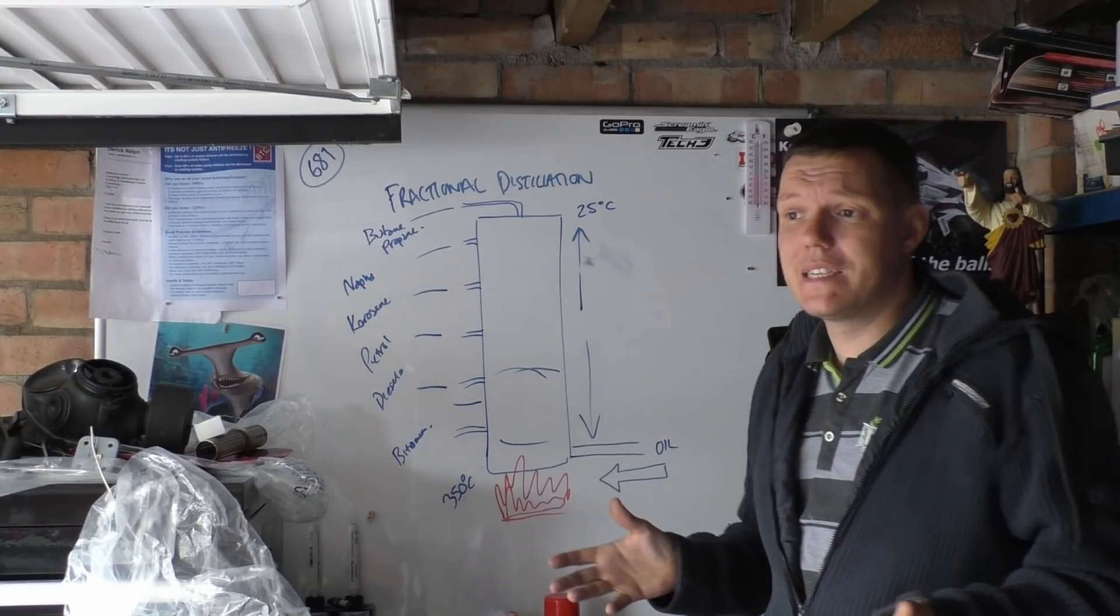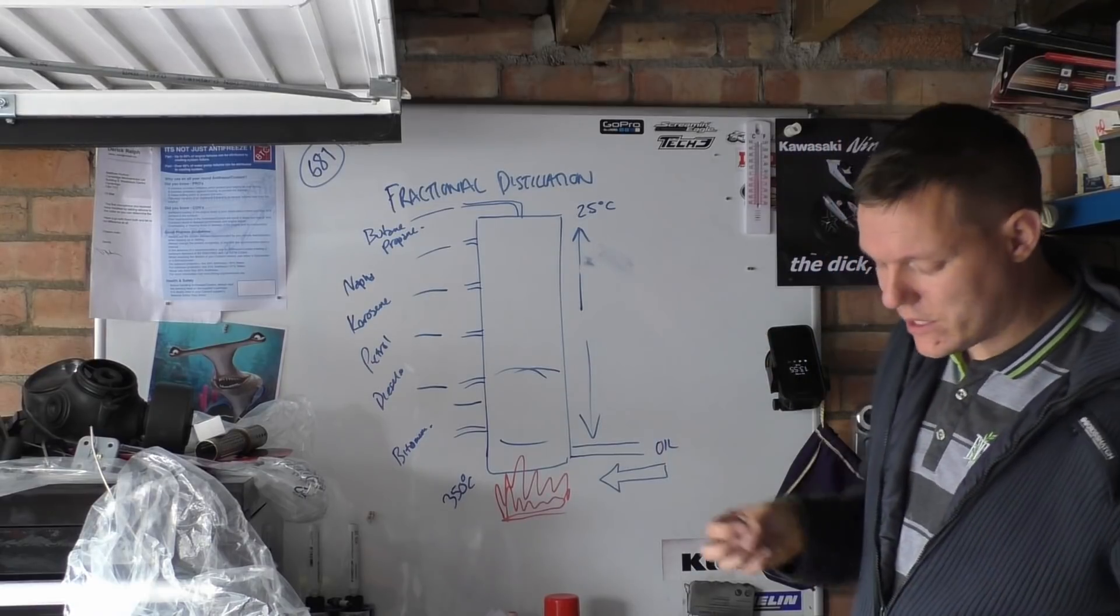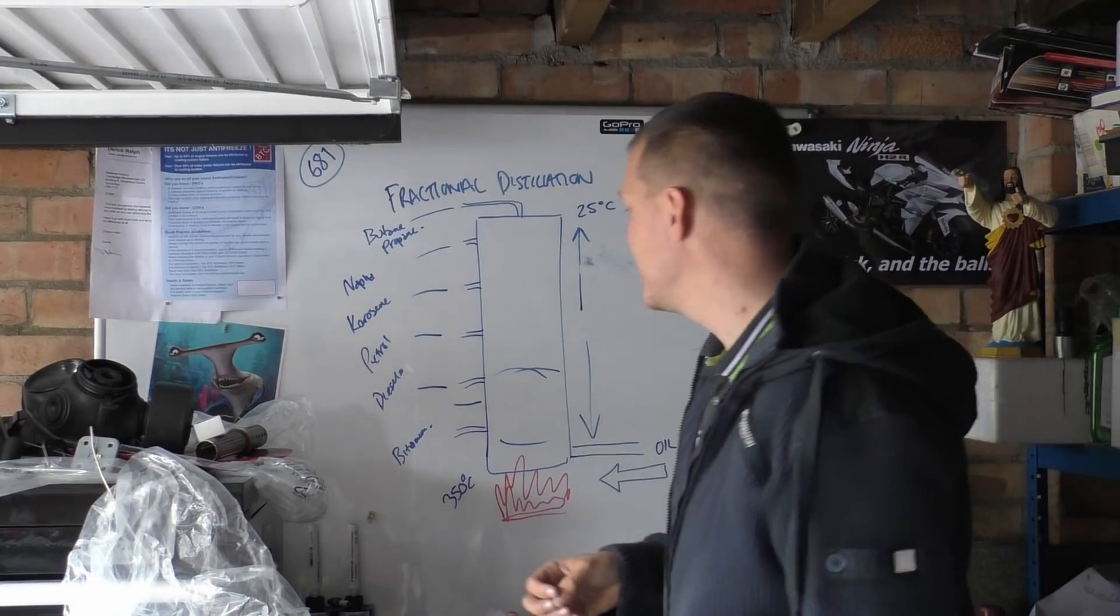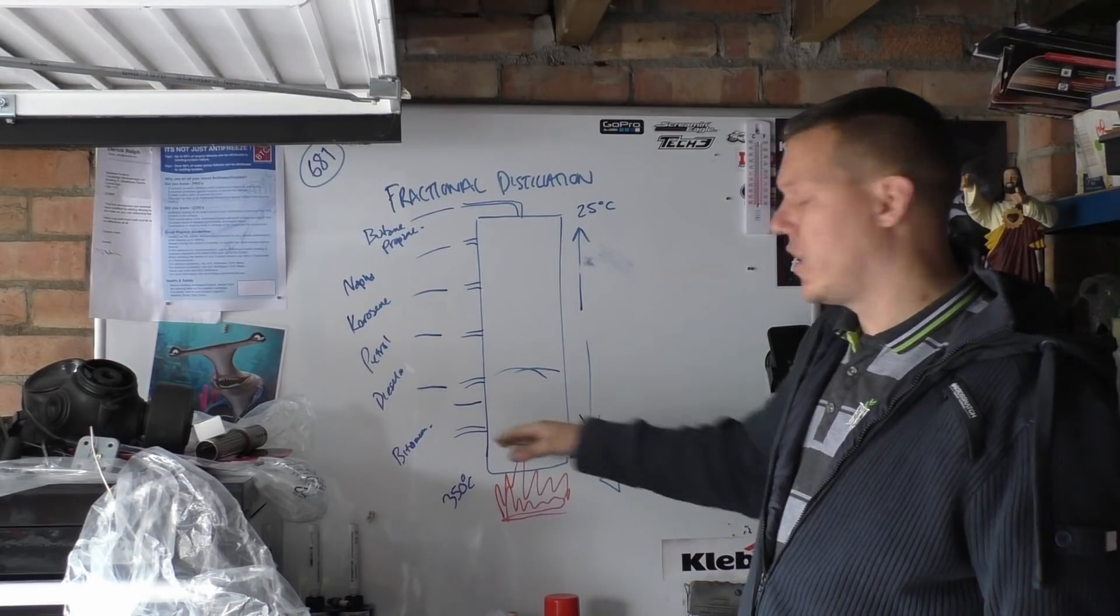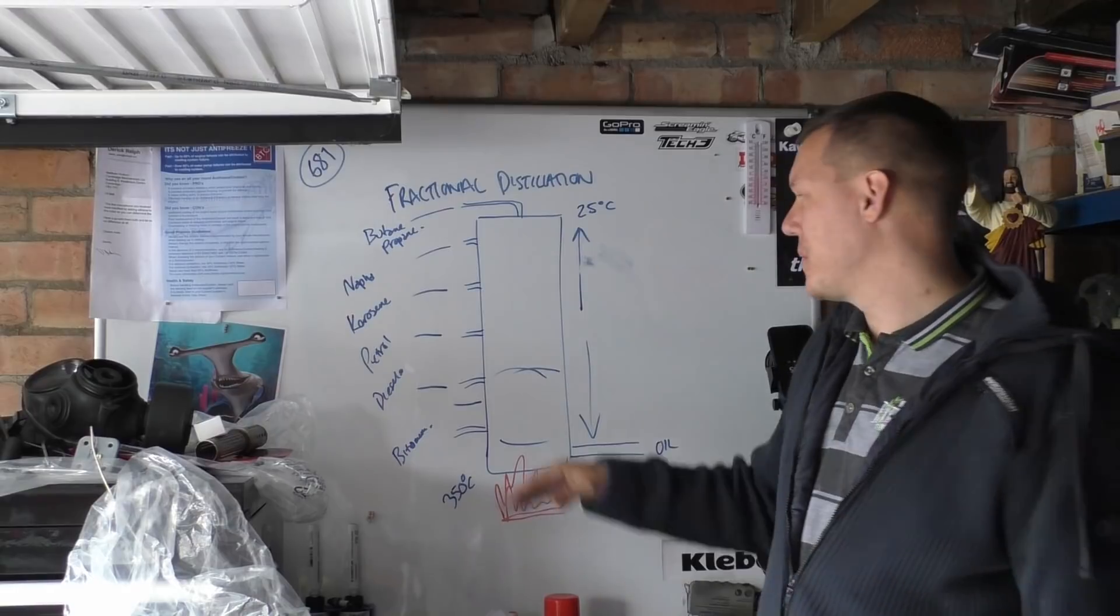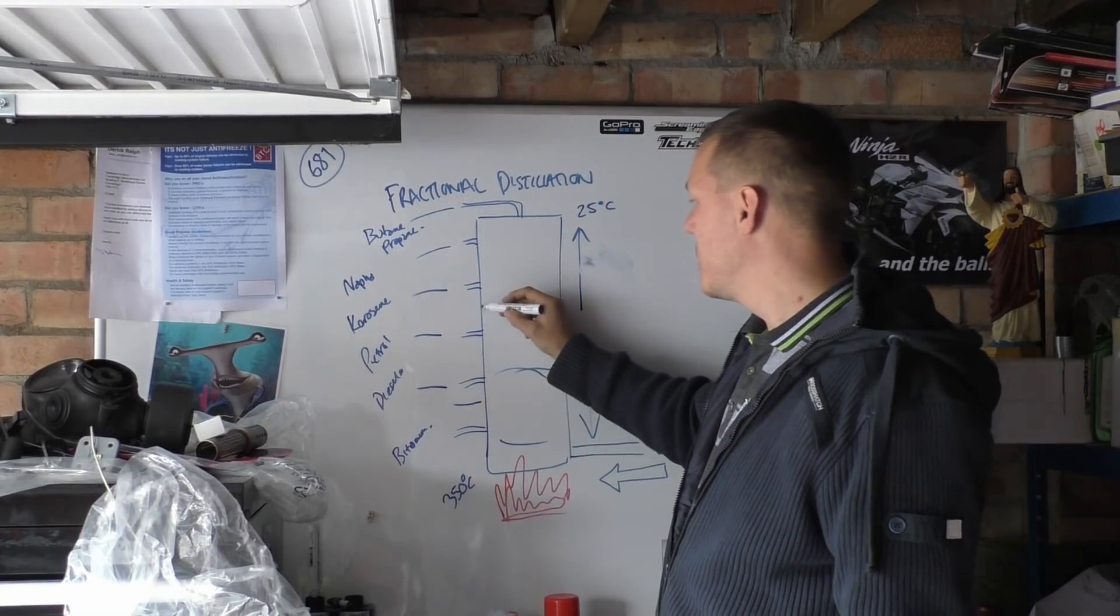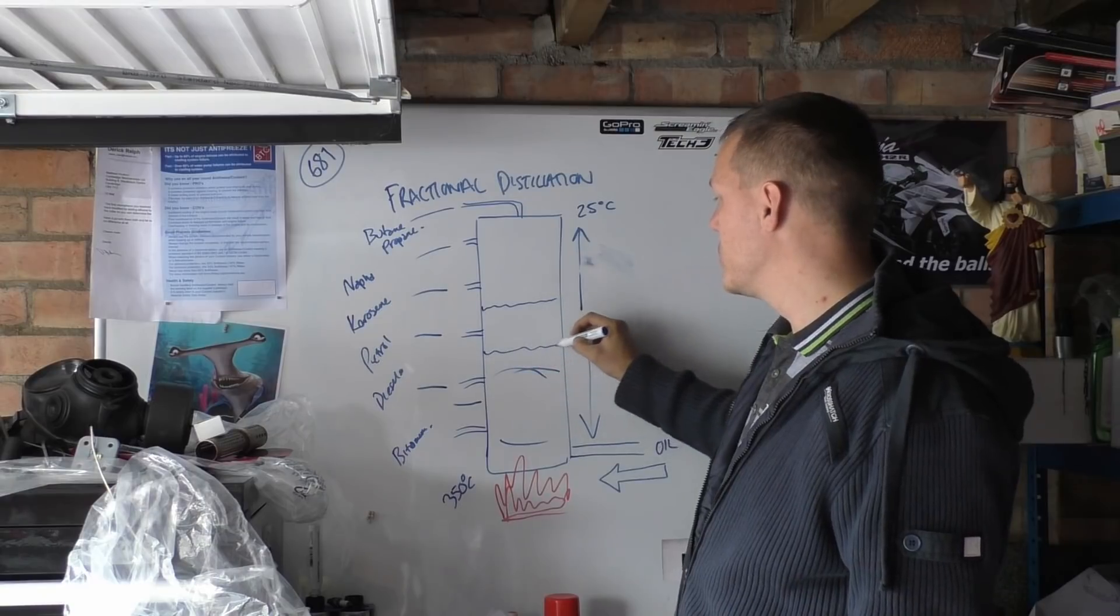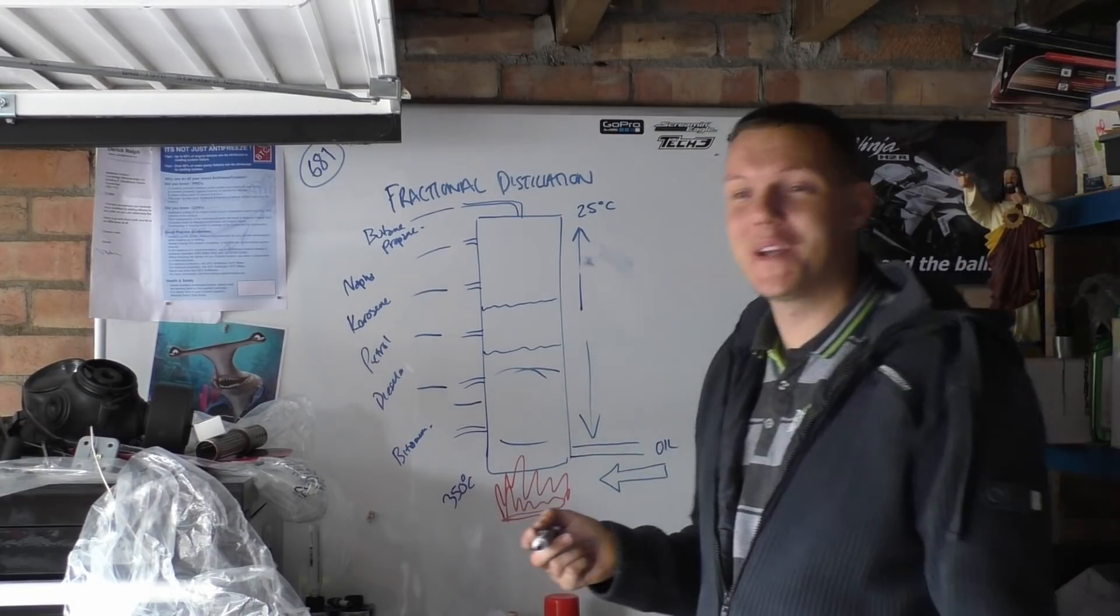And basically that's it, that's all you are doing. You can actually do this, and we will do, I will get some crude oil and we will separate it. Now one thing I must quickly mention is, so you fill this with crude oil, give it a boil and then just start straining off - how do you know where one ends and one doesn't? That's a good point, you don't. What you do is you just keep on pumping crude oil in.